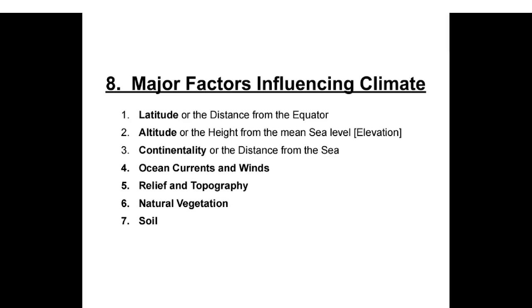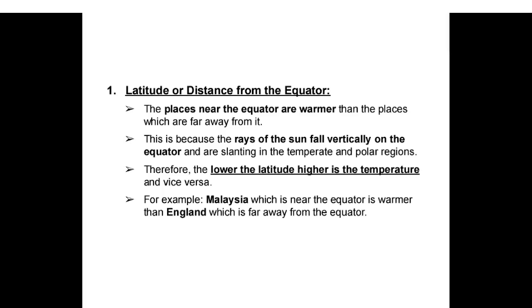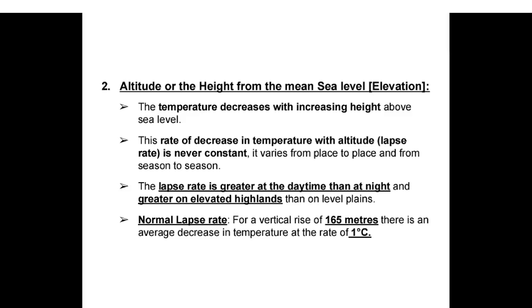Latitude: places near the equator are warmer than those far away, because the sun's rays fall vertically on the equator and are slanting in temperate and polar regions — the lower the latitude, the higher the temperature. For example, Malaysia near the equator is warmer than England. Altitude: temperature decreases with increasing height above sea level. This lapse rate is not constant; it varies from place to place and season to season — greater at daytime than night, and greater on elevated highlands than on level plains.